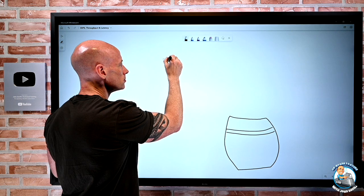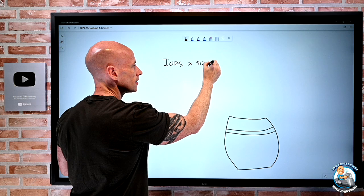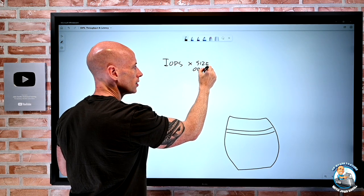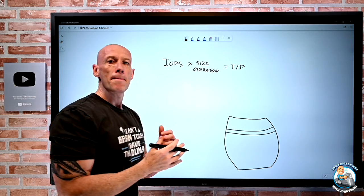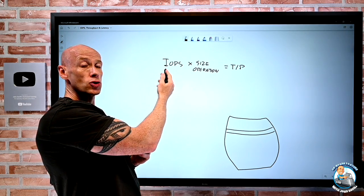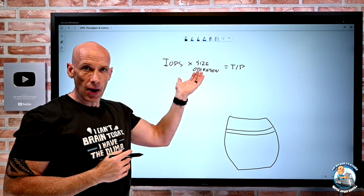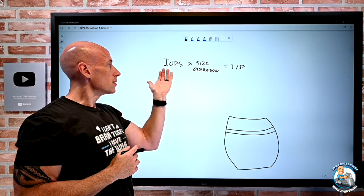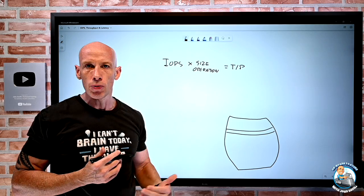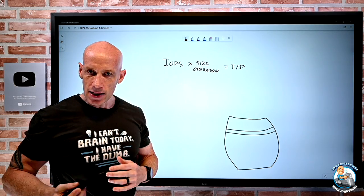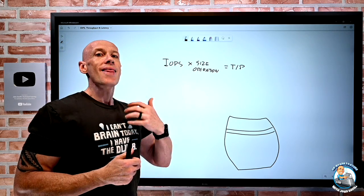So if I think about IOPS times the size of the operation, well, that's going to give me my throughput. That could be megabytes per second. So if my IOPS was 2,000 and my operation was eight kilobytes, well, then it's 2,000 times eight kilobytes. So that's 16 megabytes per second. So that would be my throughput. So that starts to make sense. It's all about, hey, the number of operations I'm performing and then the size of the operation, that will be the throughput.